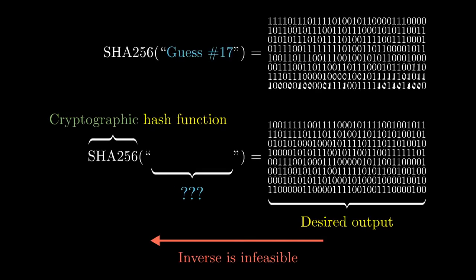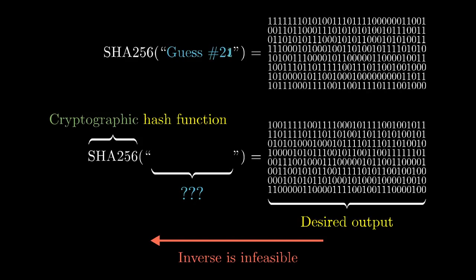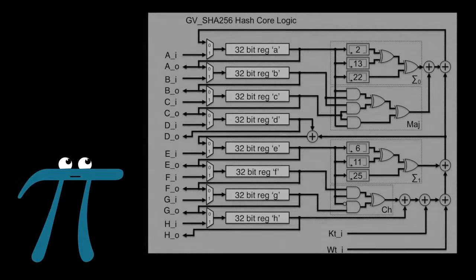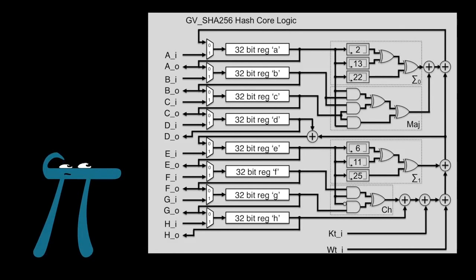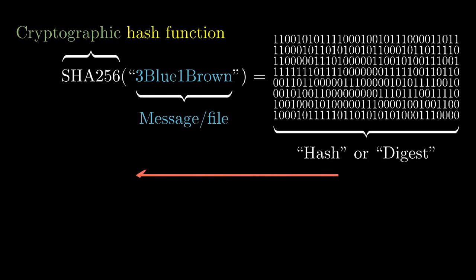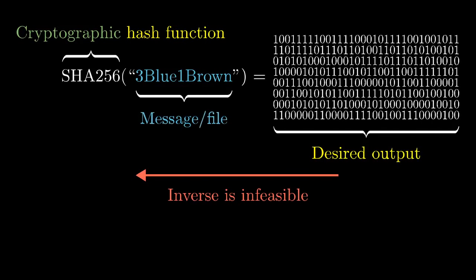You might think that if you just really dig into the details of how exactly this function works, you could reverse engineer the appropriate input without having to guess and check. But no one has ever figured out a way to do that. Interestingly, there's no cold, hard, rigorous proof that it's hard to compute in the reverse direction. And yet, a huge amount of modern security depends on cryptographic hash functions and the idea that they have this property.